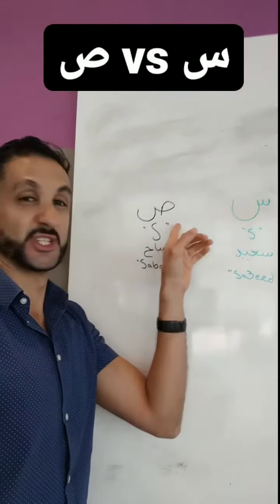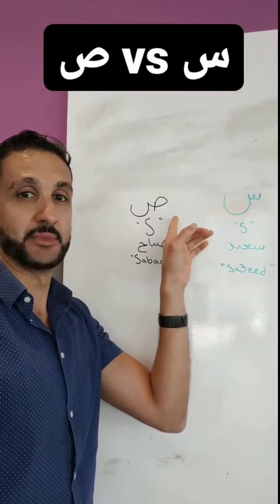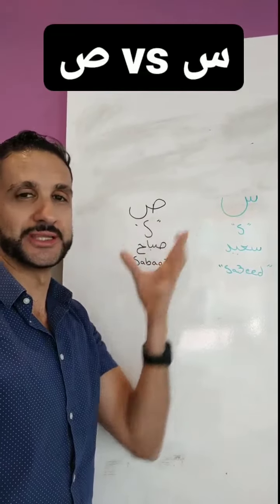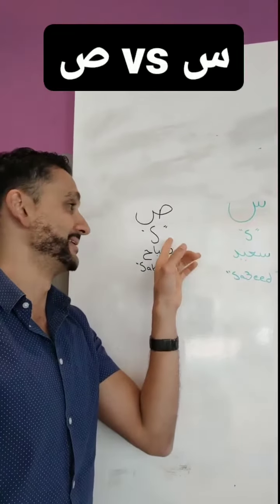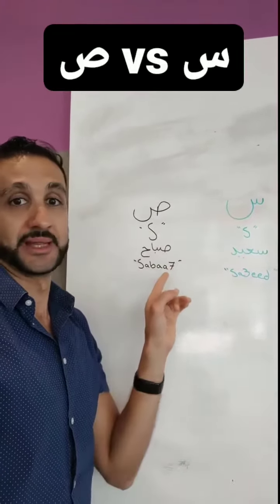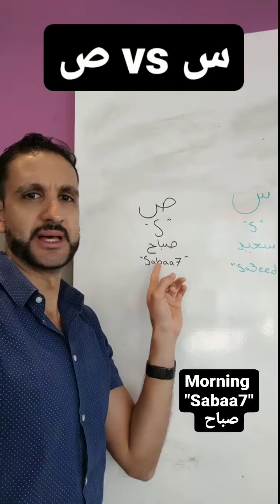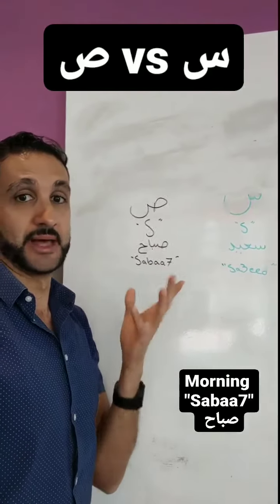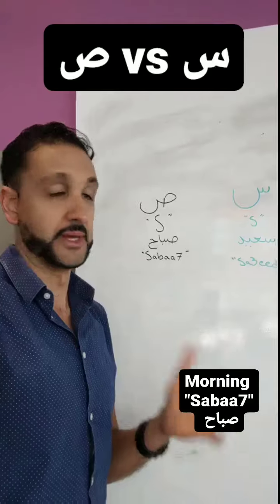Compared with the Saad — this is the name of the letter Saad — it's a heavy S or big S, like the word Sabah, as in Sabah Al-Khayr, which means good morning.